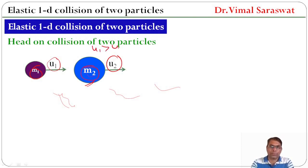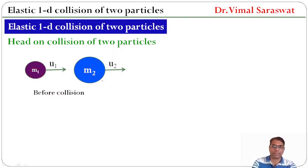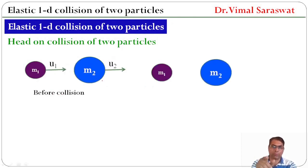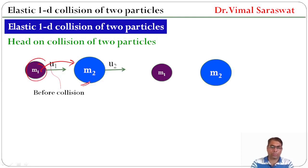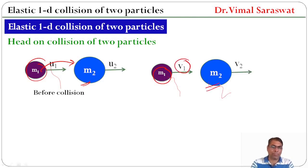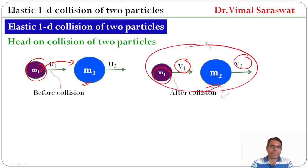U1 is greater than U2, so this particle will collide with this particle. This is the case before collision. Since U1 is greater than U2, after some time particle having mass M1 collides with particle of mass M2. After collision, the particle of mass M1 moves with velocity V1, whereas the particle of mass M2 moves with velocity V2. This is the case after collision.